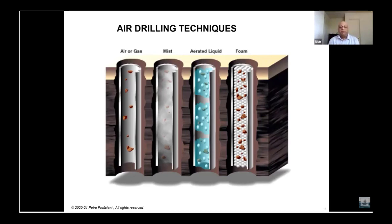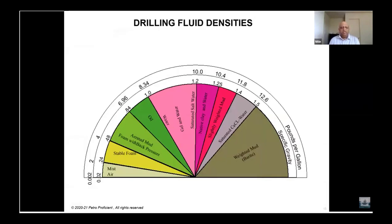Depending on your situation and conditions, one technique or a combination will be used for your well. For example, air drilling may be used in the surface section and aerated mud in the intermediate section. The overall goal is to achieve higher ROP and minimize loss circulation. In terms of densities: air or mist can achieve as little as 2 to 4 ppg; aerated mud between 4 to 6.9 ppg; single-phase oil fluid 6.9 to 8.3 ppg; and water or saturated salt water 8.3 to 10 ppg. If you need to go below 8.5 to 8.6 ppg, you need one of these techniques.